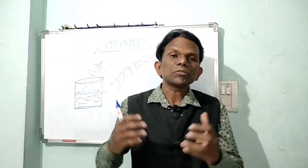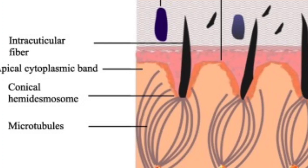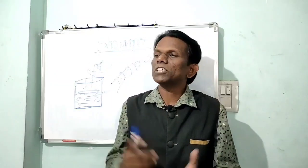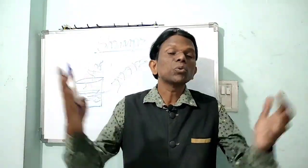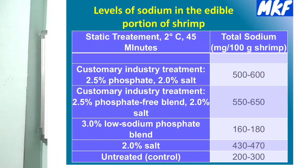An important topic is the proximate composition of shrimp. Phosphates and non-phosphates rejuvenate and enhance the water binding capacity in shrimp meat. Naturally, shrimp contains phosphorus and sodium — about 100 to 250 mg of sodium per 100 grams of shrimp meat.